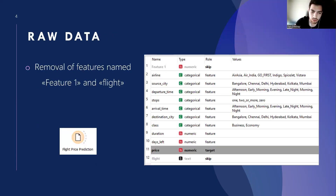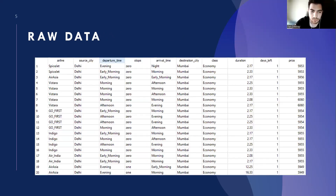When we looked at the raw data, we first removed the features called feature1 and flight. These extracted features are uniquely defined for each sample and have no effect on the model. When we view our raw data using the data table widget, we see only two of our nine features are numeric, the remaining seven are categorical, and prices are the target.